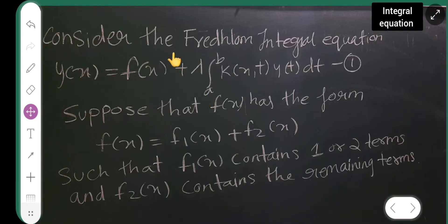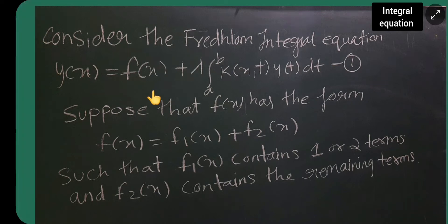Then, you all have to consider the Fredholm integral equation. Y of X is equal to F of X plus Lambda integral from A to B K of X comma T Y of T DT. And consider this as equation 1. This is your kernel. This is your Lambda which belongs to the real. This is your non-homogeneous term, F of X.